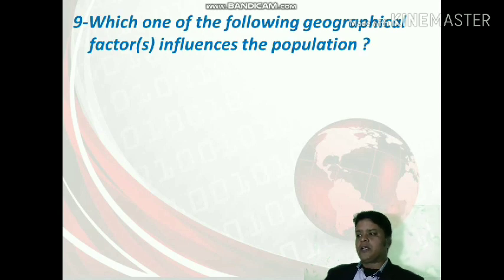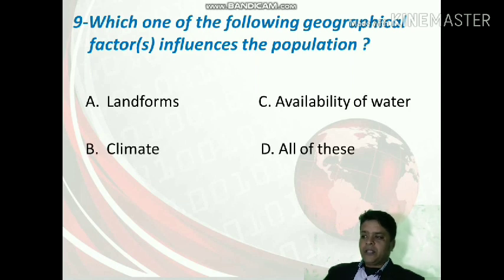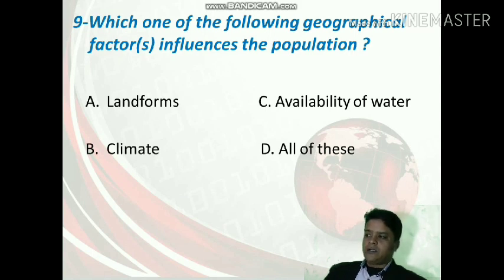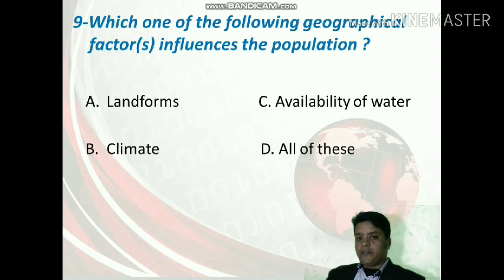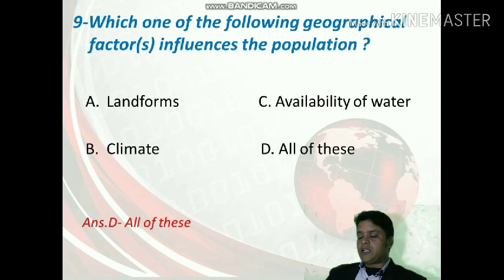Which one of the following geographical factors influences population? The options are landforms, climate, availability of water, or all of these. Looking at the question, landforms, climate, and water availability all affect population. So answer D is correct — all of these are factors that affect population density.